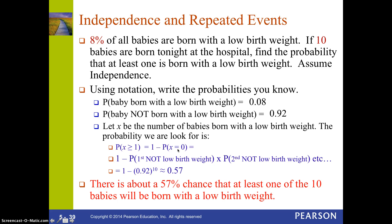The key to this whole problem is: since we want P(at least one), it equals 1 minus P(none). That's the key to the whole thing. Otherwise you'd have to consider every combination — first one has low birth rate, second doesn't, third does, and so on. But there's only ONE way to have none with a low birth rate, which is why we use the complement.